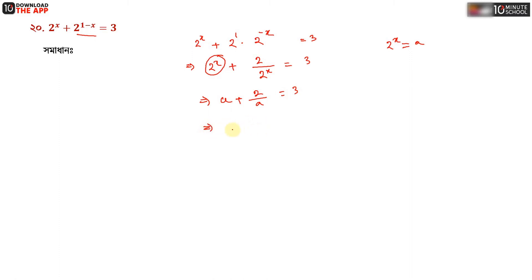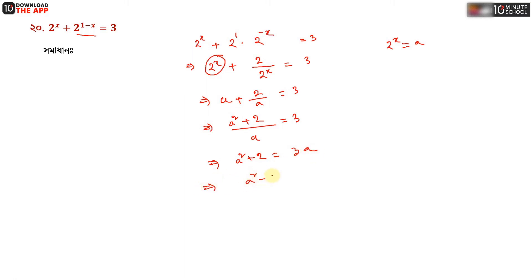If we multiply both sides by a, taking common denominator, then a squared plus 2 equal to 3a, which gives us a squared minus 3a plus 2 equal to 0. Now we split the middle term.